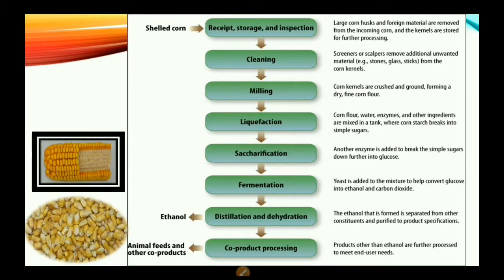Now let us look at the dry milling process. It follows the same initial steps: receipt, storage, and inspection, where large corn husks and foreign materials are removed from the incoming corn and the kernels are stored for further processing. Next is cleaning, where screeners remove additional unwanted materials such as stones, glass, and sticks from the corn kernels.